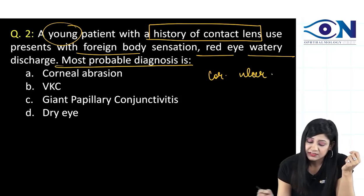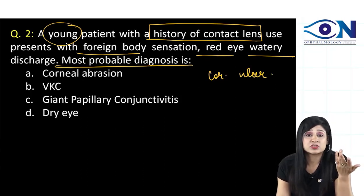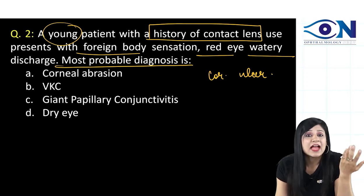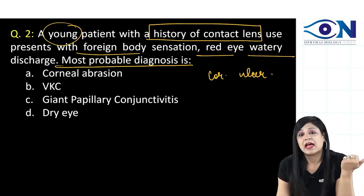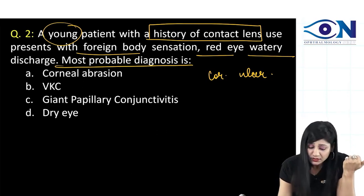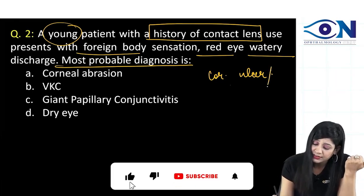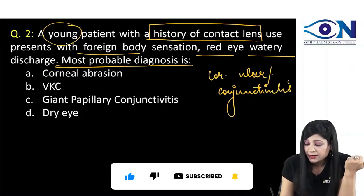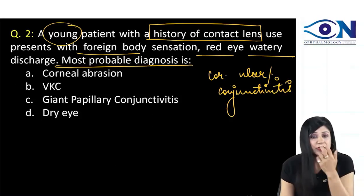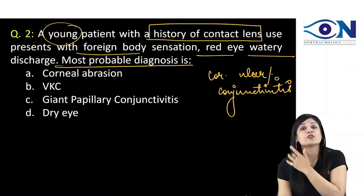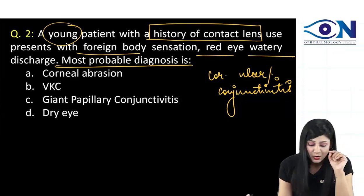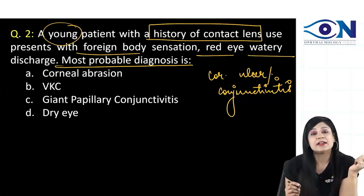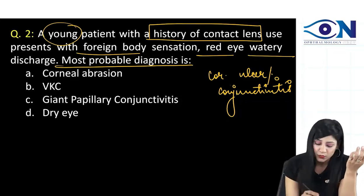We are having an ulcer, foreign body sensation, redness, and discharge. It can be a corneal ulcer or it can be conjunctivitis, because they are not talking about blurring of vision — and this is along with contact lens use. So, due to the contact lens, what are the things you know?